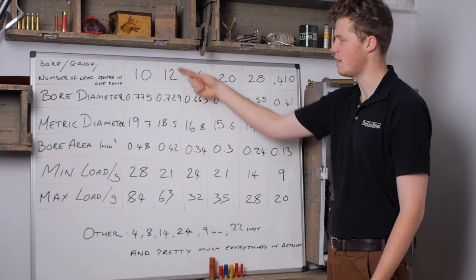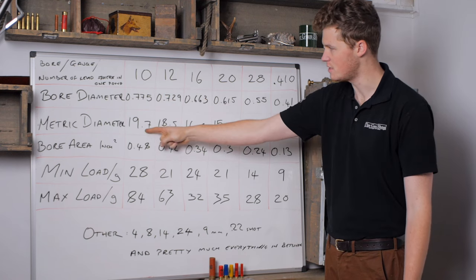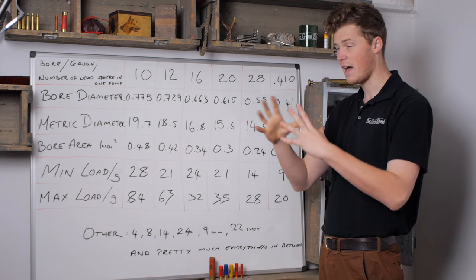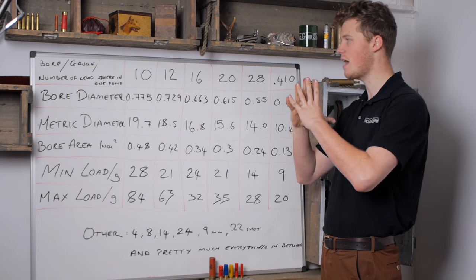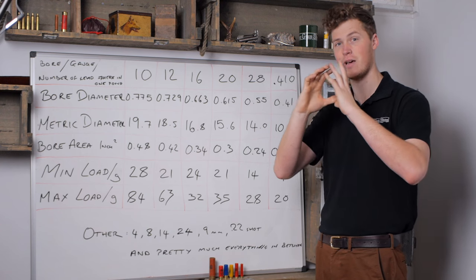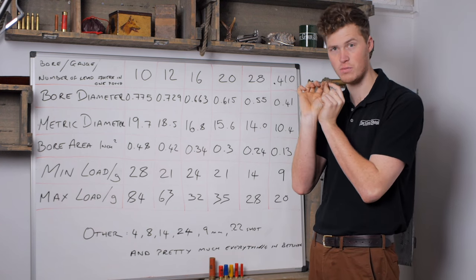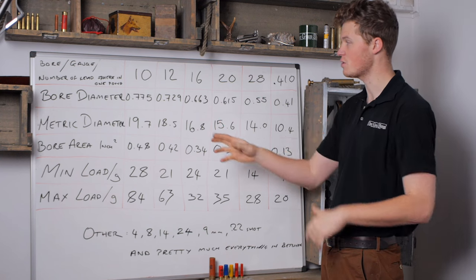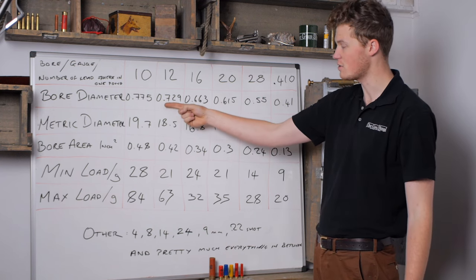For those of you who prefer metric, this is in millimeters; this is in inches. A 12 bore is normally .729 of an inch. That can vary, obviously. A bore diameter for a shotgun is not quite so necessarily perfect as the bore diameter of a rifle. A rifle bore should be perfectly parallel and straight. A shotgun bore can fluctuate somewhat, so a 12 bore can go from .709 all the way to .749 of an inch.